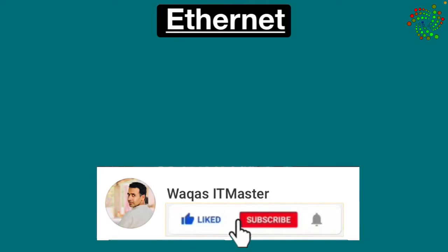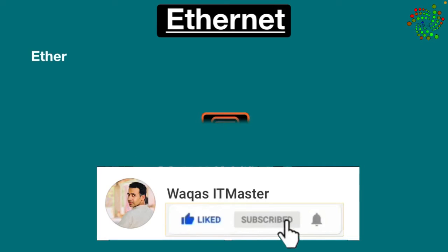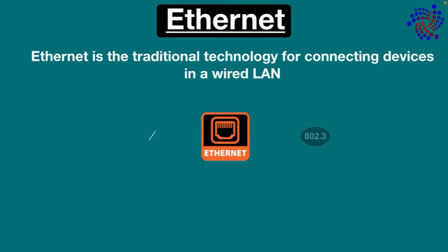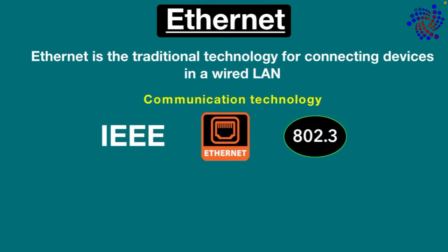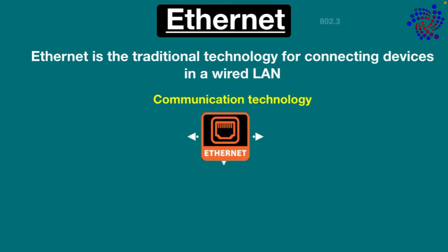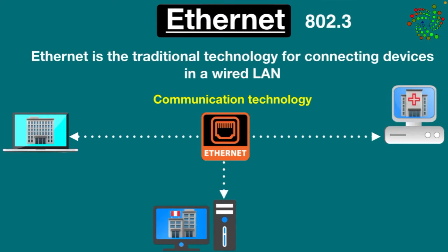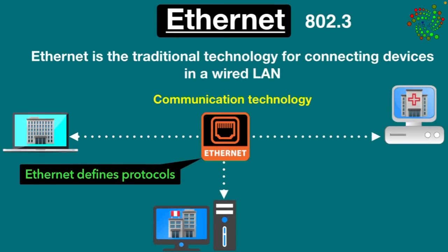Hello everyone. What is Ethernet? This is what we are going to talk about today. Ethernet is the traditional technology for connecting devices in a wired local area network. Ethernet, technically known as IEEE 802.3, is actually a communication technology that is used to connect devices in schools, offices, and hospitals. At the most basic level, Ethernet defines rules or protocols that devices use to communicate over the network, unlike Wi-Fi which is a wireless technology.